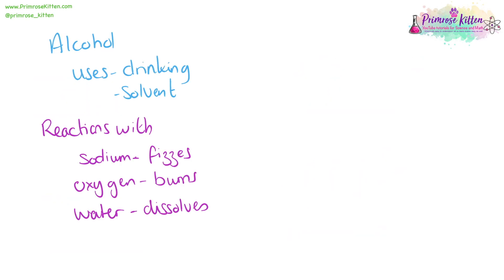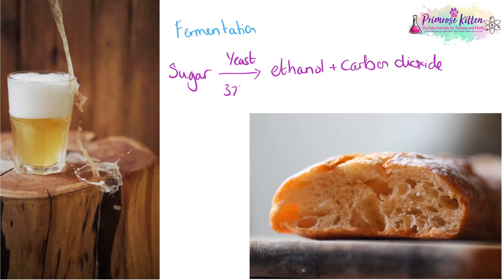Alcohol can be used for drinking or as a solvent. When you react with sodium, it's going to fizz. When you react with oxygen, it's going to burn — it's just a combustion reaction. When you react with water, it's going to dissolve. Another way of producing alcohol is fermentation — this is where we take sugar, mix it with yeast, keep it nice and warm, and we get ethanol, which you can use for alcohol, and carbon dioxide, which makes the bubbles in bread. It's exactly the same process for beer making and bread making.